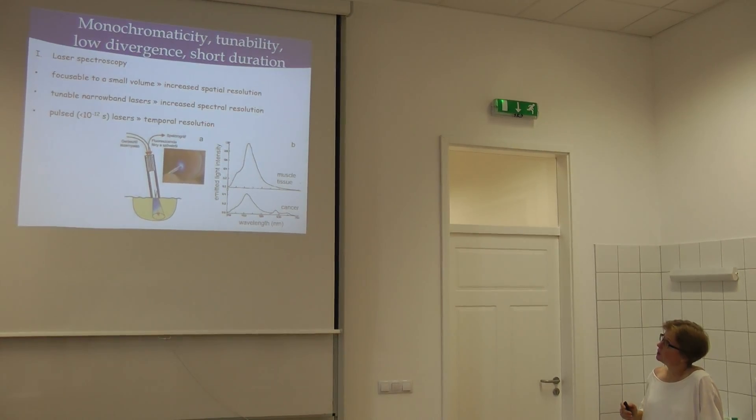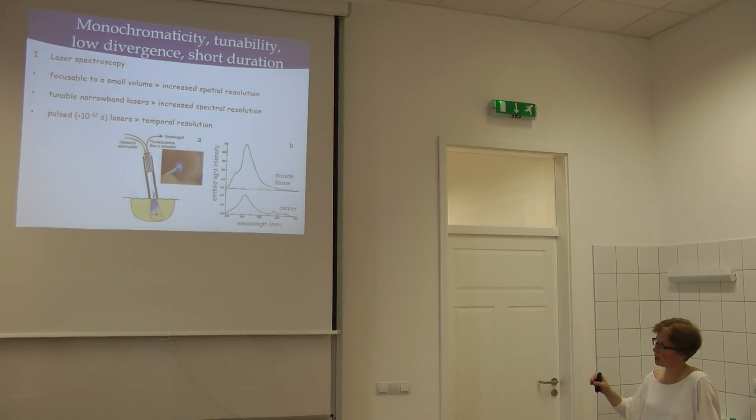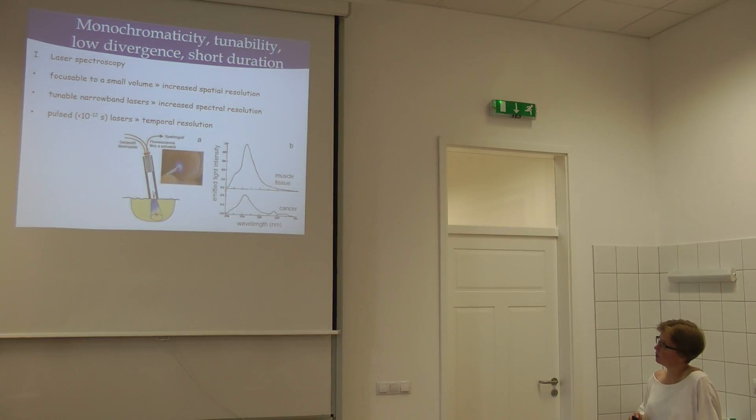Monochromaticity of the laser and tunability can also be used for spectroscopic applications, so you shine the light onto the tissue and depending on what the reflected light looks like, you can tell what type of tissue you have shown the light on. Again, to do this you need a very well defined frequency, so this is why lasers are very advantageous here. If you have a pulsed laser, you can actually make a distinction between different tissues by looking at how the light which comes off the sample decays. So looking at the temporal evolution also carries some information.